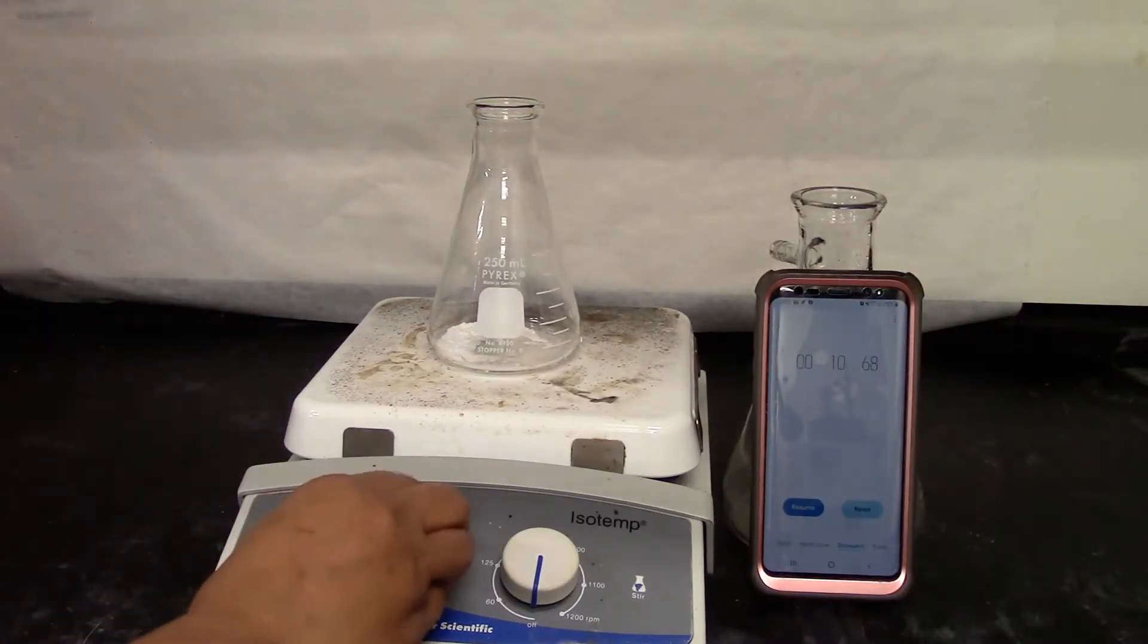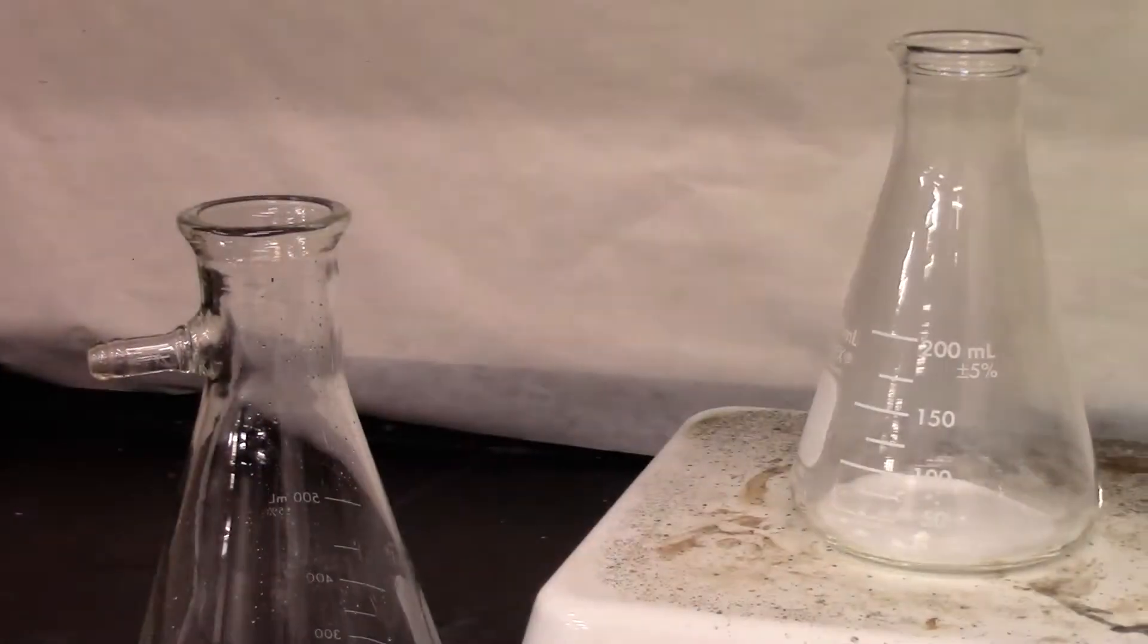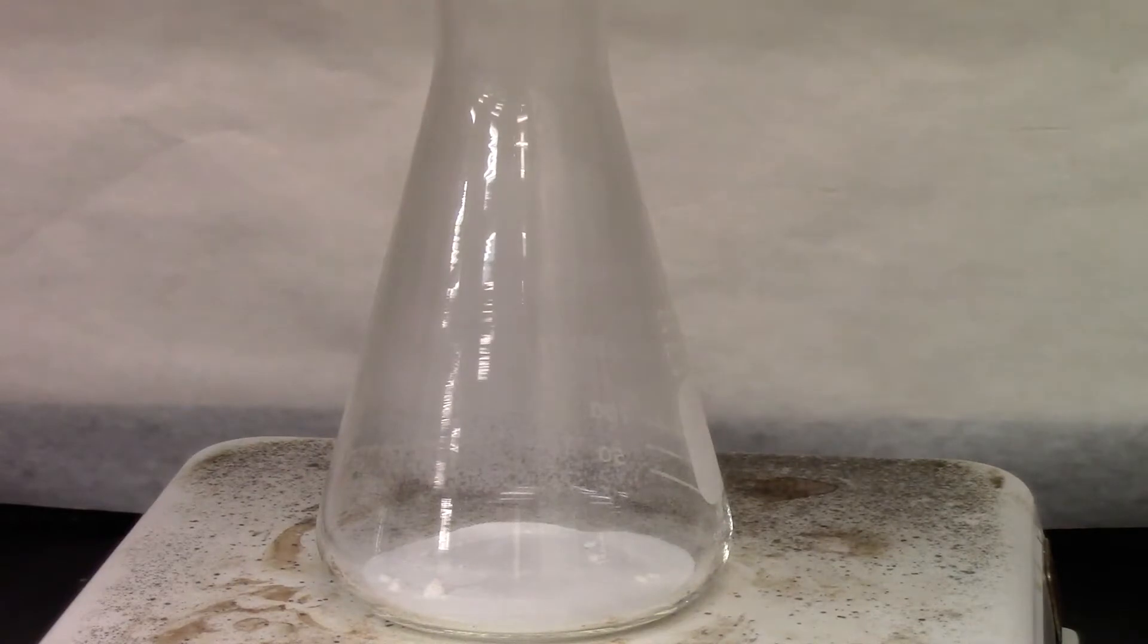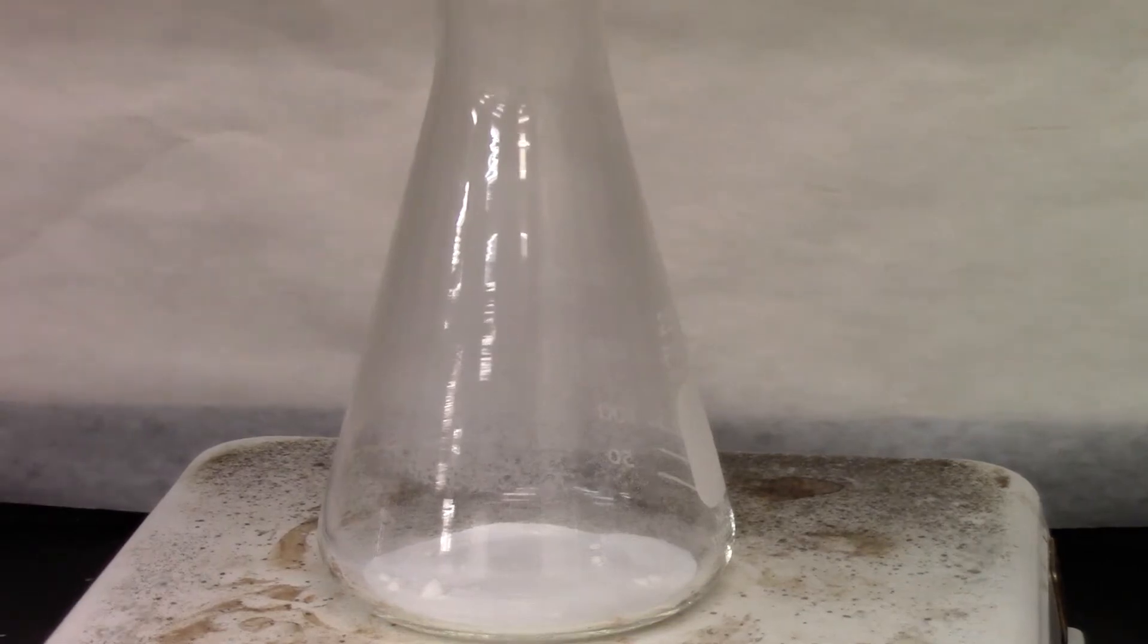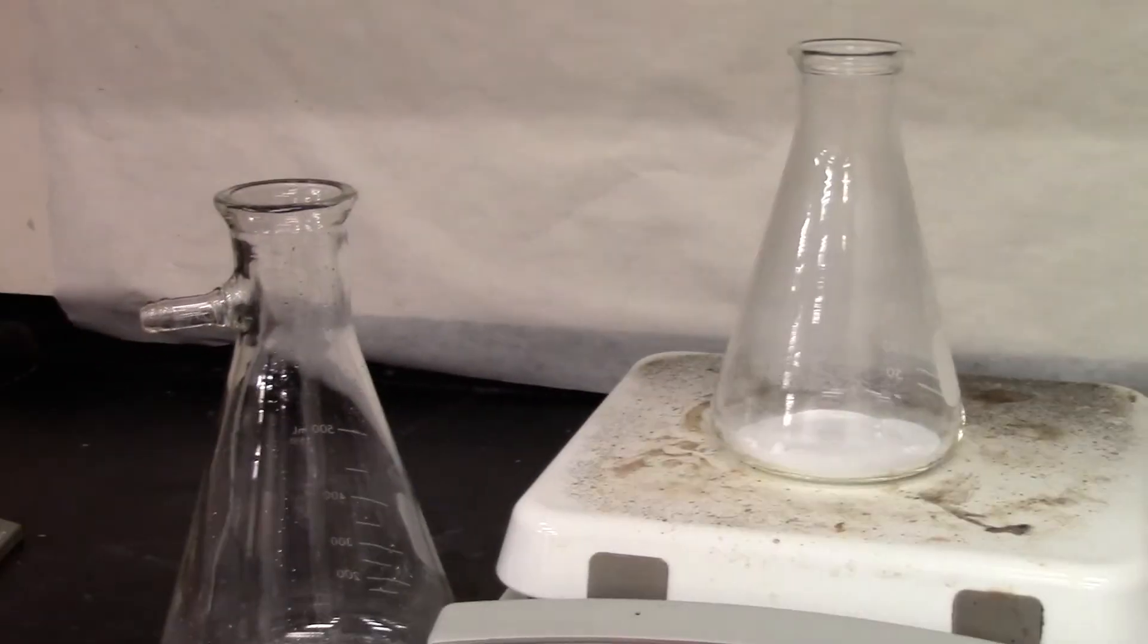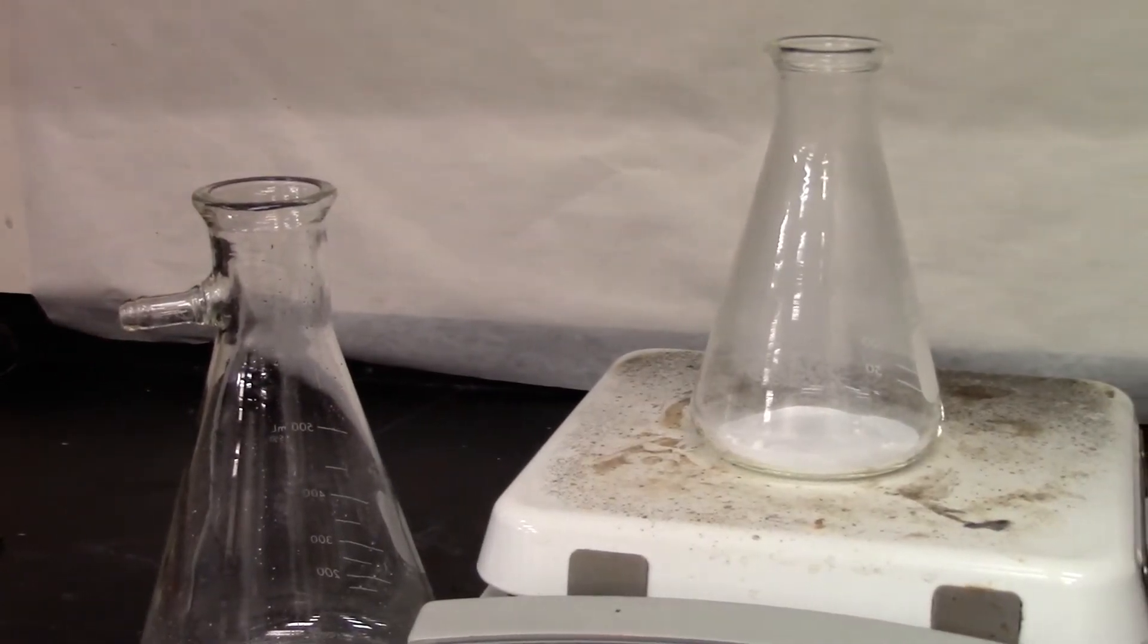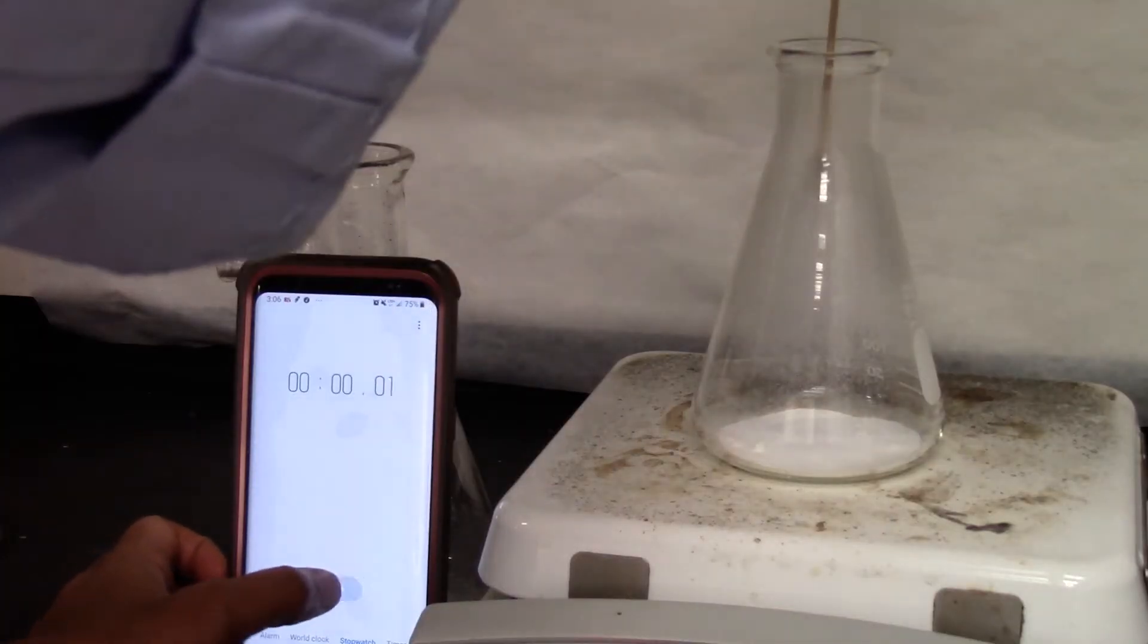I'm going to turn on the heat. So we do see moisture on the inner wall of the Erlenmeyer flask. Now it's a good time to put our splint inside. So it barely burns for a second.